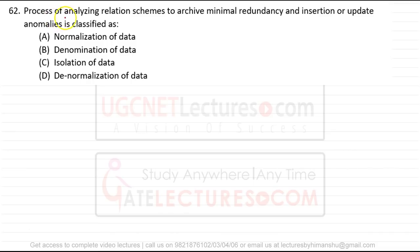Question 62: the process of analyzing a relation schema to achieve minimal redundancy and to remove insertion and update anomalies is classified as what? Redundancy means the same value is present in multiple tables. For example, a student's phone number might appear in the student table, admin table, course table, and fees table. When you update the phone number in one table, you must update it in all tables.